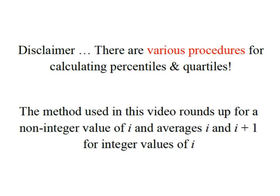So, the method I'm going to use in this video rounds up for a non-integer value of the index and then averages the index and the value right beyond the index for integer values of i. And I'll explain what that means in a second.